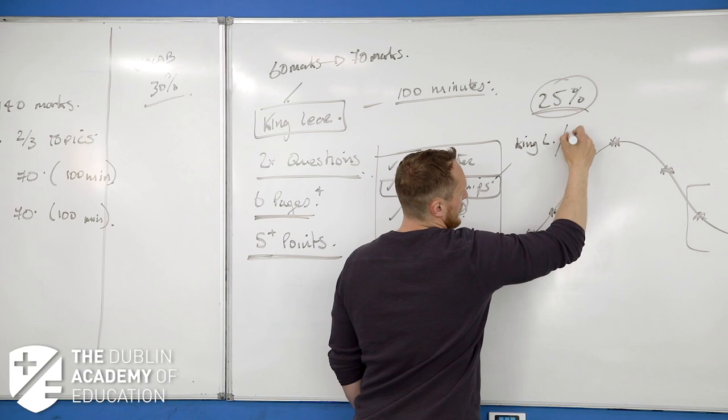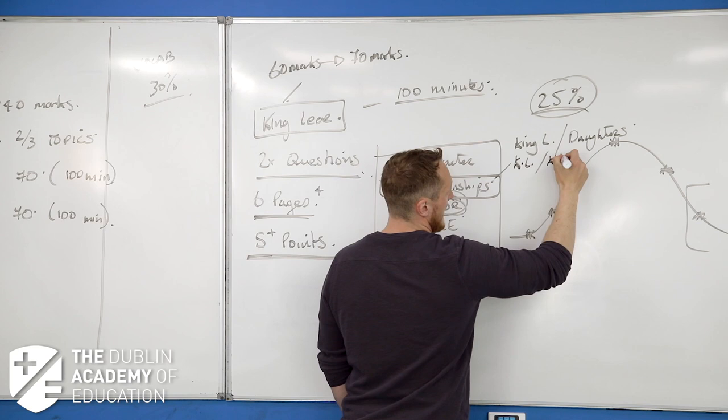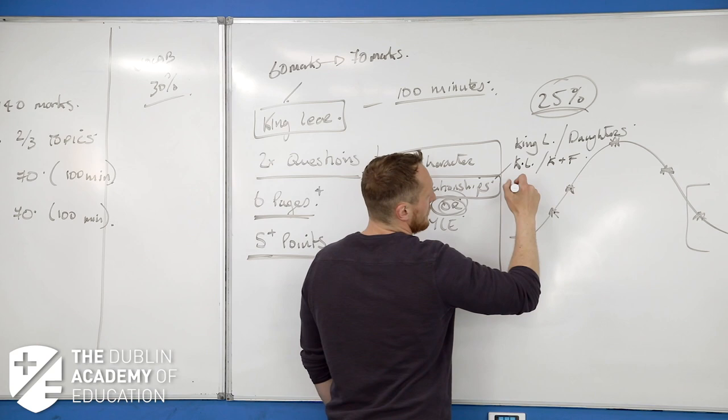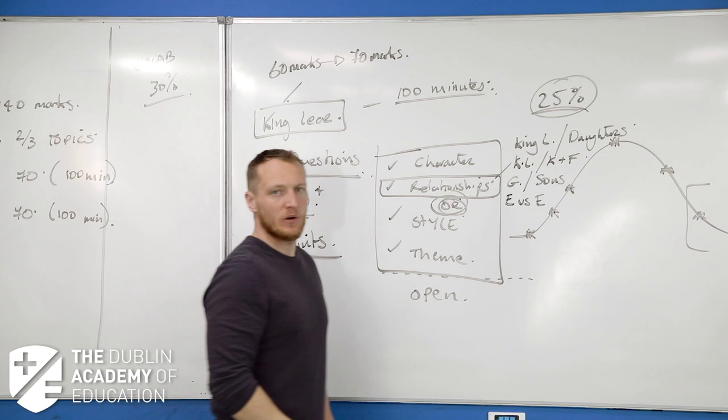The main relationships: obviously King Lear and then the daughters - all the daughters Goneril, Regan, Cordelia and the variations there. King Lear and the loyal characters of Kent and the Fool. Gloucester and his sons.